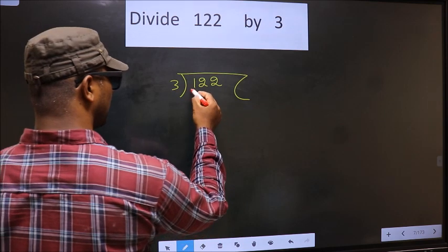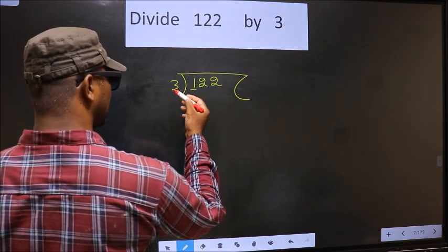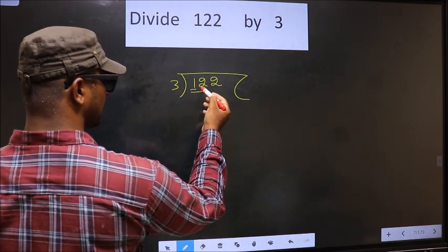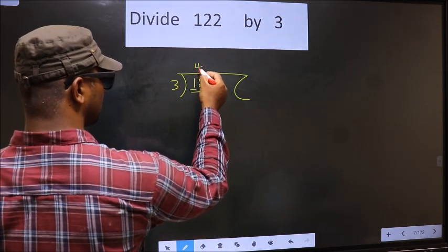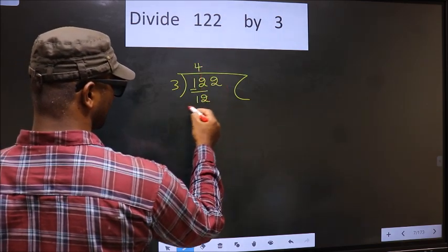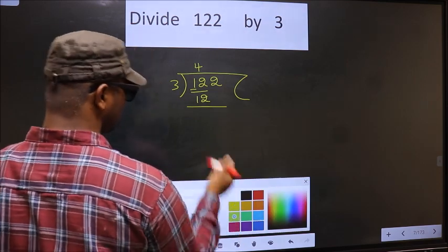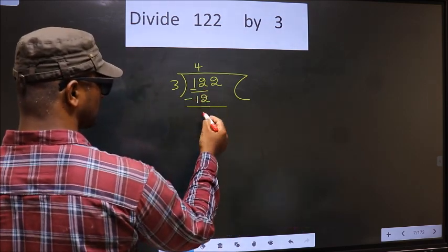Now here we have 1 smaller than 3, so we take 2 numbers that is 12. When do we get 12 in 3 table? 3 fours, 12. Now you subtract. 12 minus 12, 0.